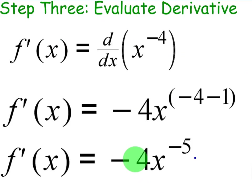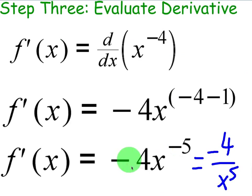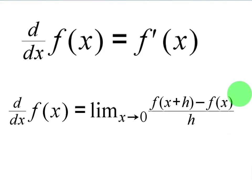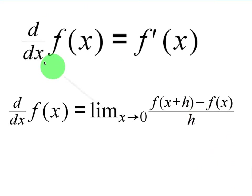Depending on your book or assignment, some might have the final answer written as negative 4 over x to the 5th — taking the negative exponent and putting it under the fraction. For now, focus on how the power rule works; both forms are acceptable. Also, remember that every time we write d/dx or f′(x), these ultimately represent the original definition of the derivative — all derivative rules are proven using that definition. They're just shortcuts of writing the longer formula.